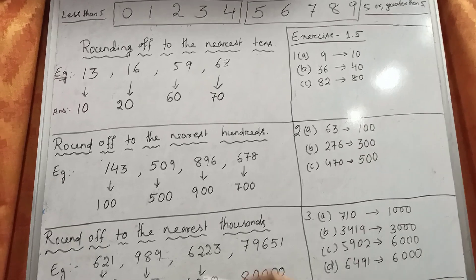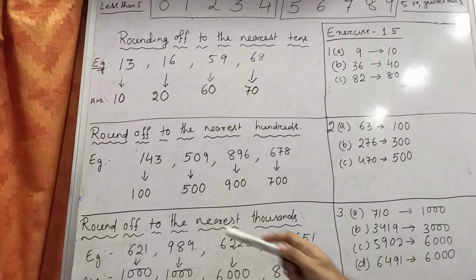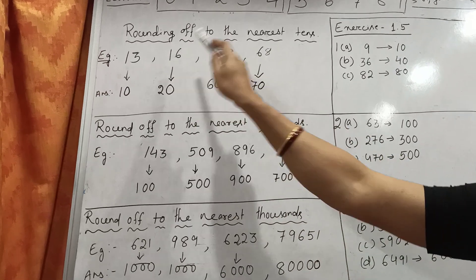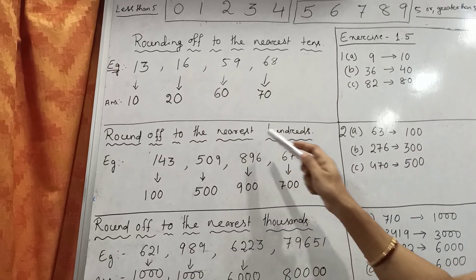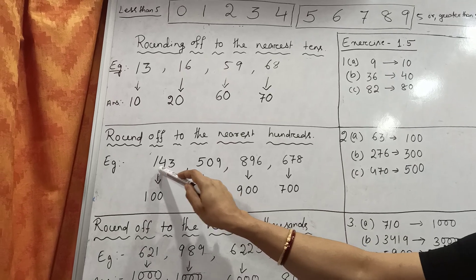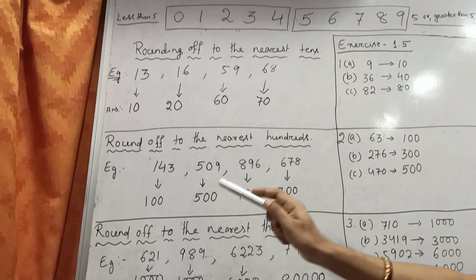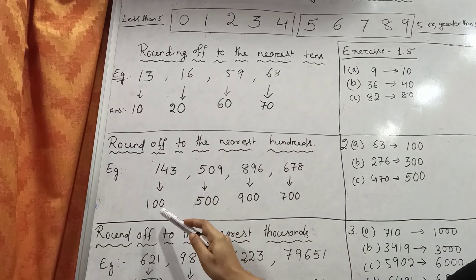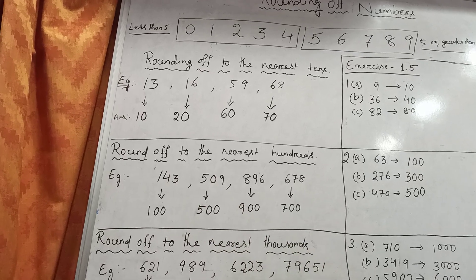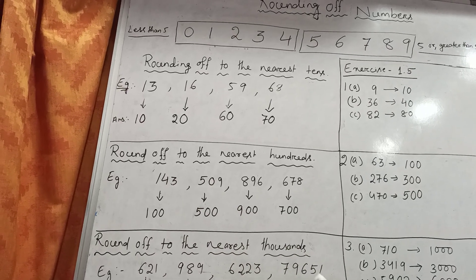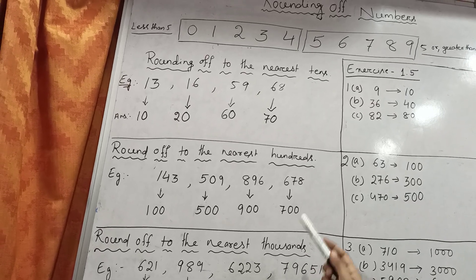Now, rounding up to the nearest 100. In this case you have to check the tens digit. If the tens digit is less than 5, then both the tens and units digits become 0 and the hundreds digit remains the same. If the tens digit is 5 or more than 5, then the tens and units digits become 0 and the hundreds digit is increased by 1.